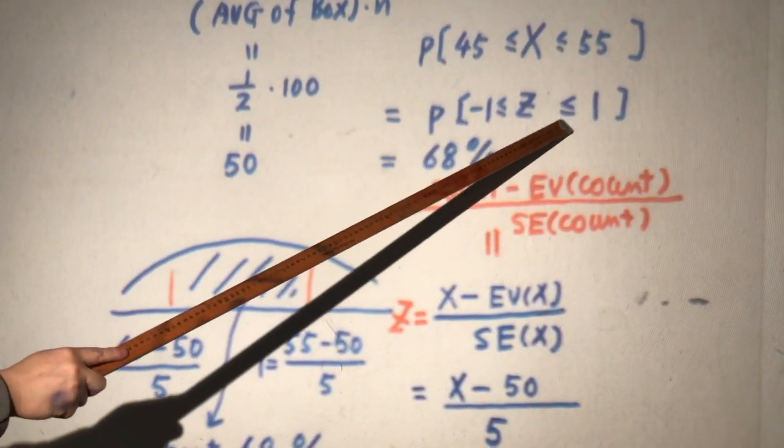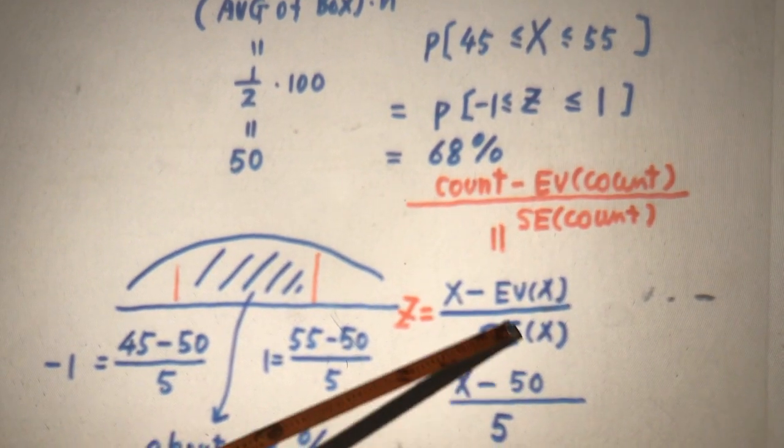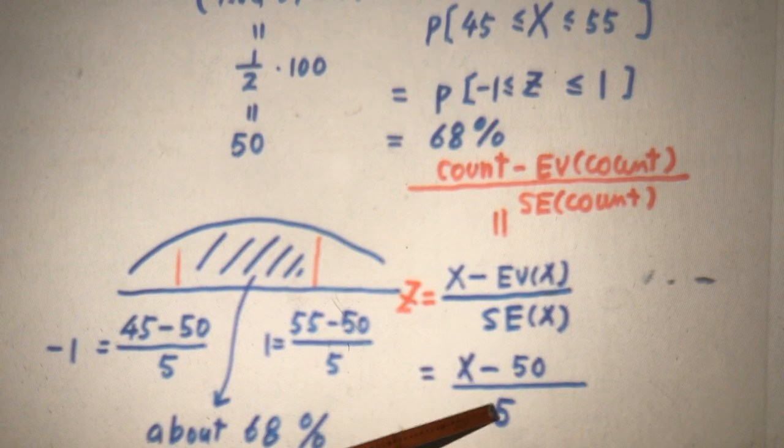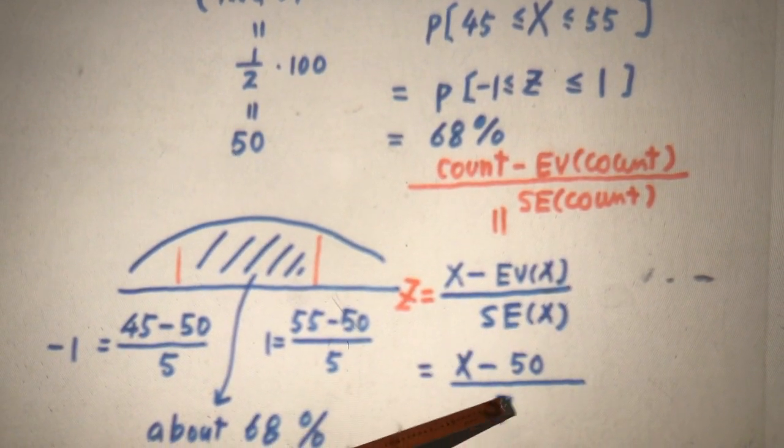This is what we just found, 50. So X minus 50. What's SE(count)? 5. We calculated this before. So SE(count) is 5.